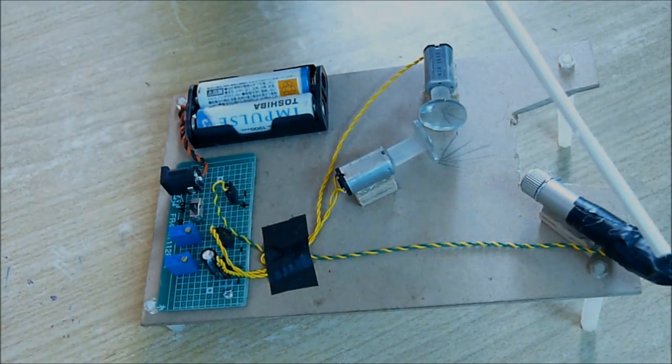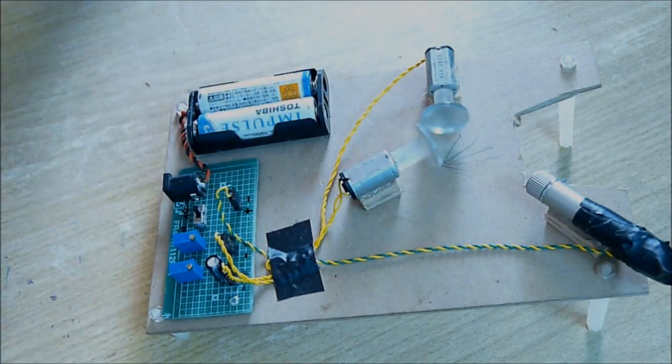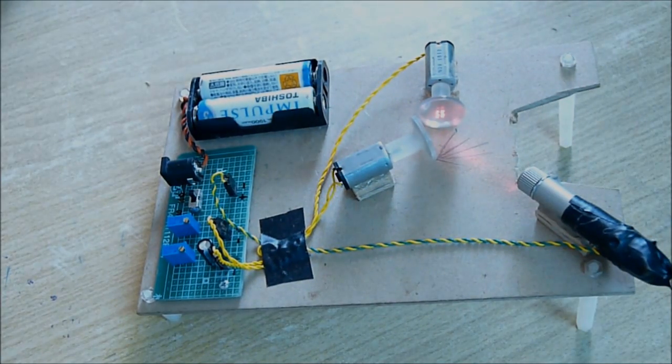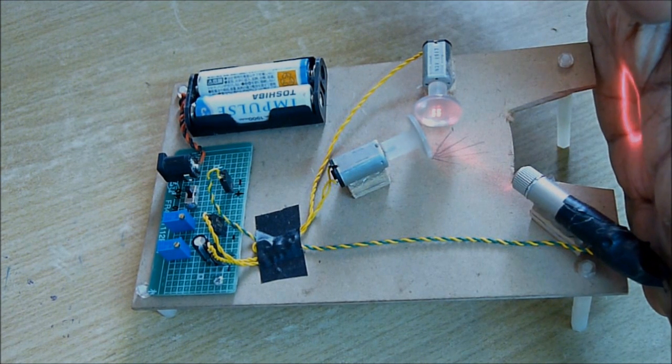So laser will come from this torch to this mirror, get reflected and go to the front. Now switch on. You can see the laser is getting reflected to the front and creating a pattern.